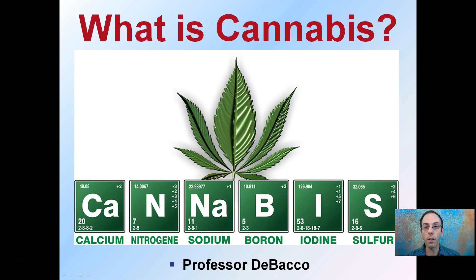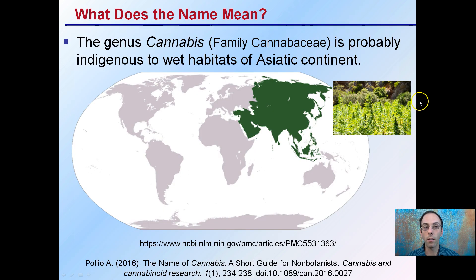This title presents a question that a lot of people have: what is cannabis? We're going to investigate a little bit the background for what cannabis actually is. First off, what does the name mean? Cannabis is probably indigenous to the wet habitats of the Asiatic continent — this is likely where it originated. There are a couple of links here for some sources if you want to take a look.